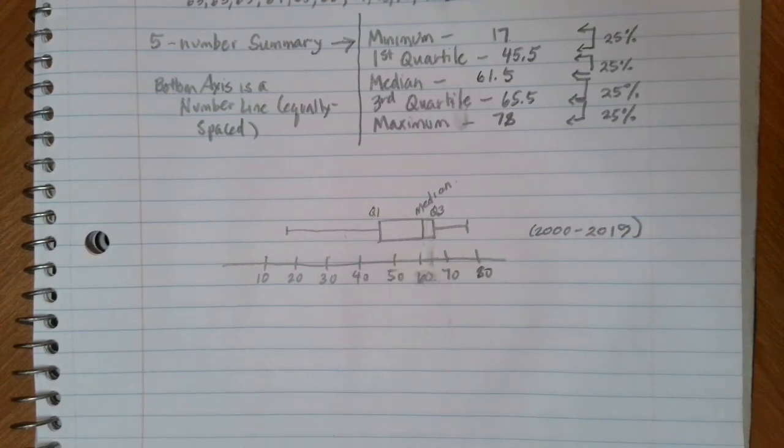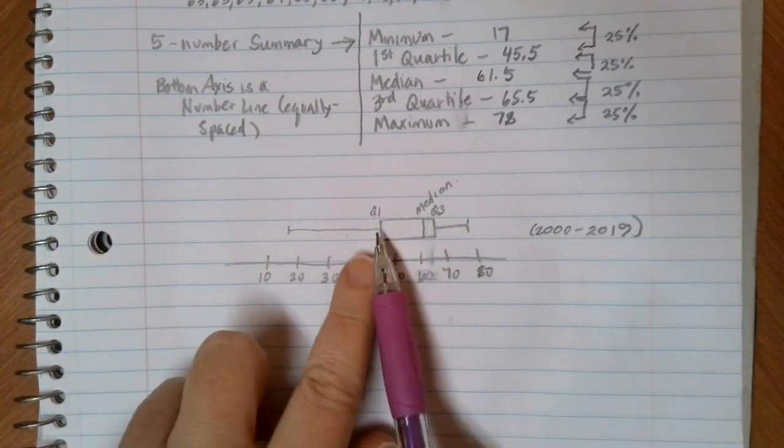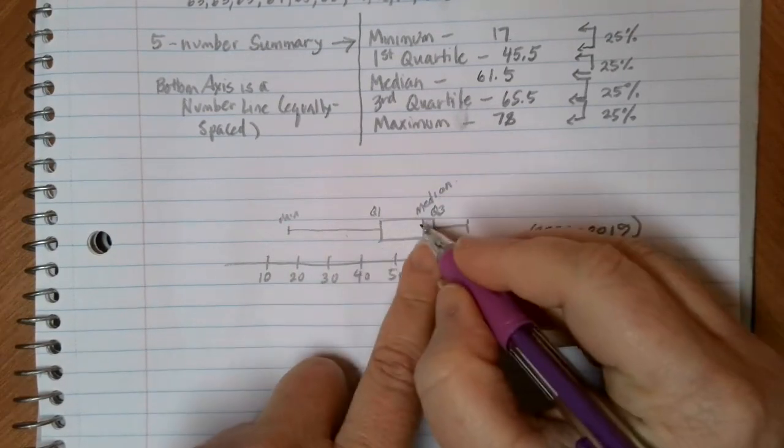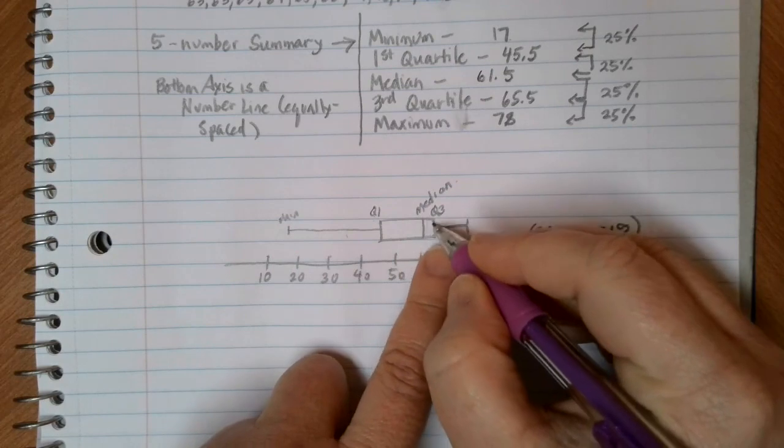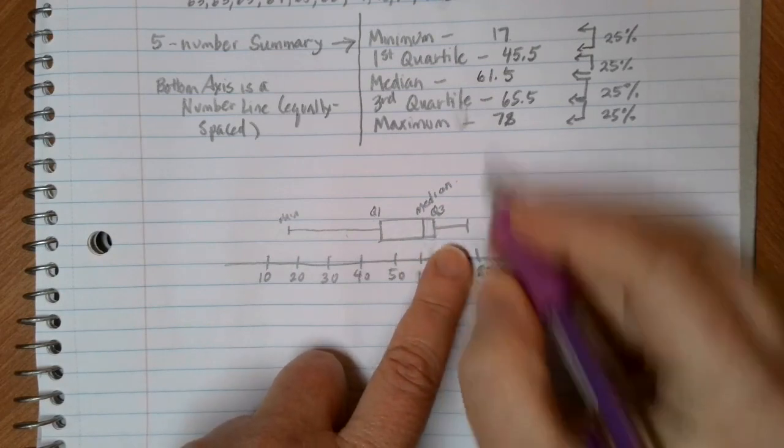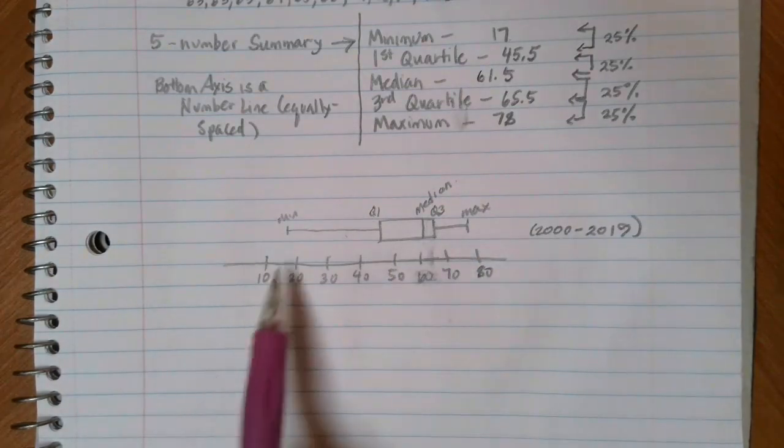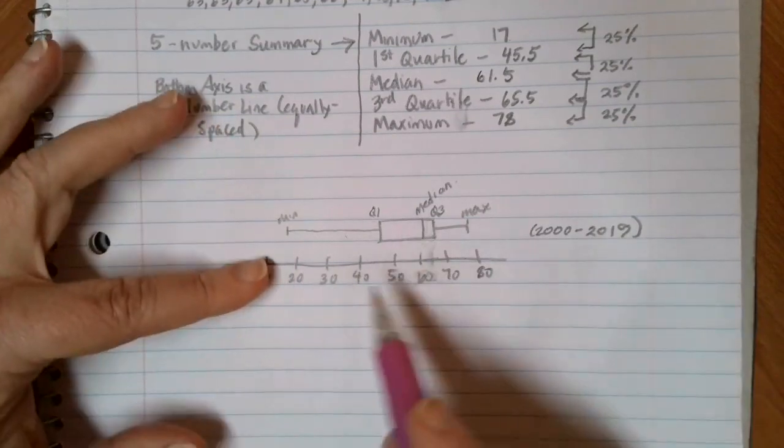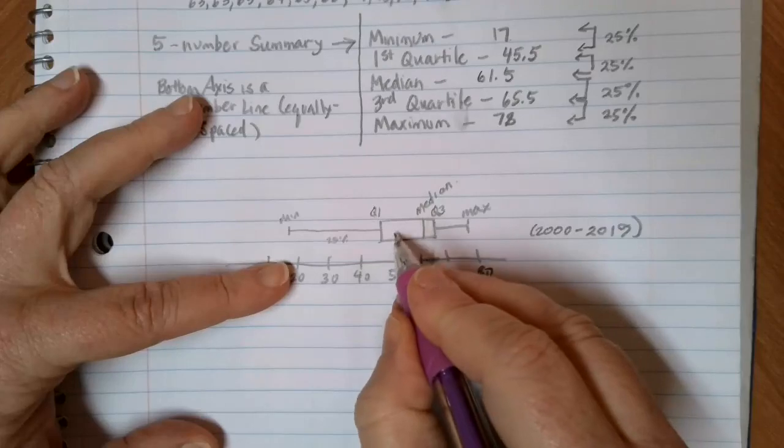One really neat thing about box plots, and that's all there is to a box plot. The five-number summary: this is our minimum. We have a bar up to Q1. That's our box with the median line, Q3 ending the box, and then a whisker up here to our maximum value. Really all that you have to pay attention to is that equally spaced number line below and those points in terms of what's going on. And this gives us that breakdown of 25% of the data in each section.